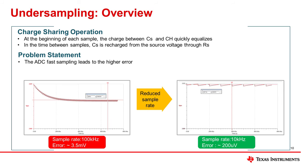This is illustrated by simulating the circuit shown in the figure. As shown here, when the external source is only able to partially recharge CS before the next sample occurs, each sample bleeds off some of the charge on CS. In simulation results with a 100 kHz signal, equilibrium is reached at about 3.5 mV of tracking error. If the sample rate is reduced to 10 kHz, CS can be almost completely recharged between samples, and the tracking error is within tolerance.